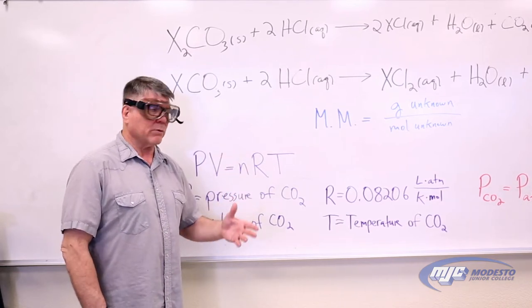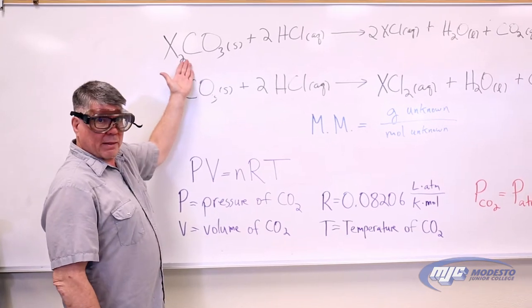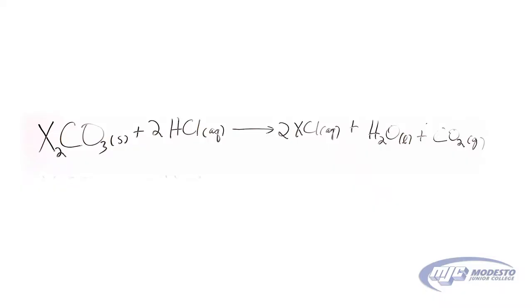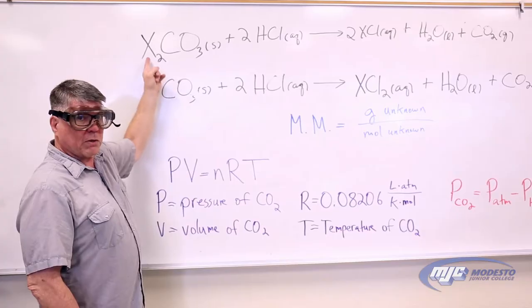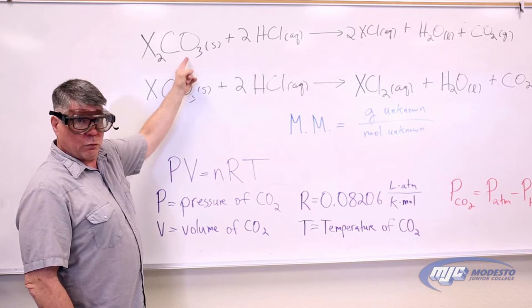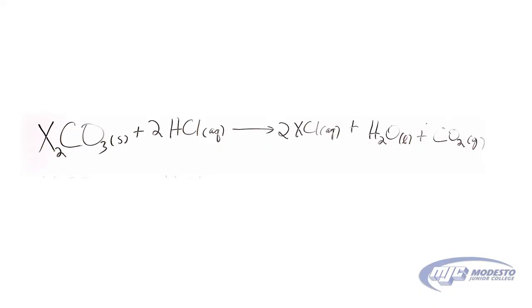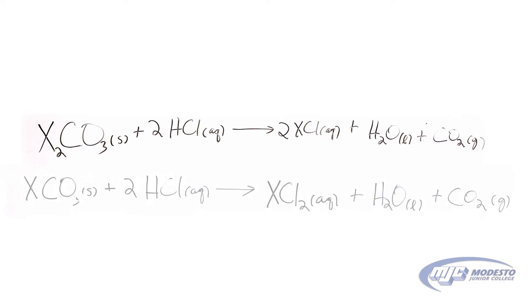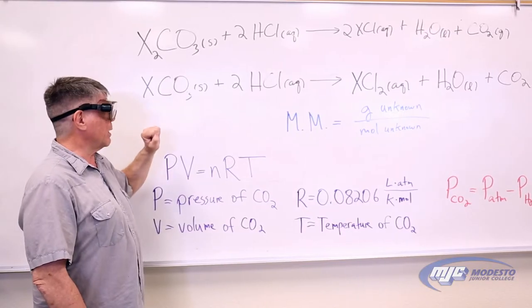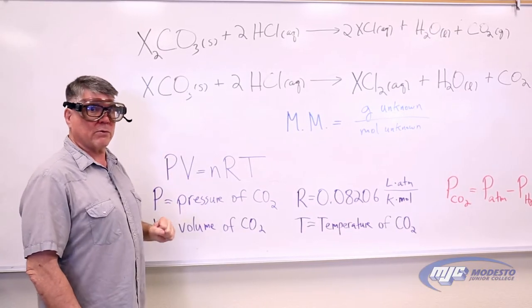A couple possibilities. It either is going to look something like this up here, where X stands for whatever the cation is. If the cation has a plus one charge, there will be two of them to balance the negative two charge on the carbonate. On the other hand, if the cation has a positive two charge, there will only be one, because there's a negative two charge on the carbonate balanced by the positive two on the cation. Those are the only possibilities you have.